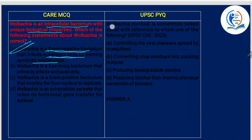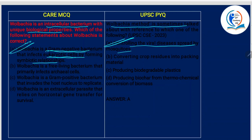The Wolbachia method is sometimes talked about with reference to which one of the following? As I just explained, the answer is: controlling the viral diseases spread by mosquitoes. This is the right answer.